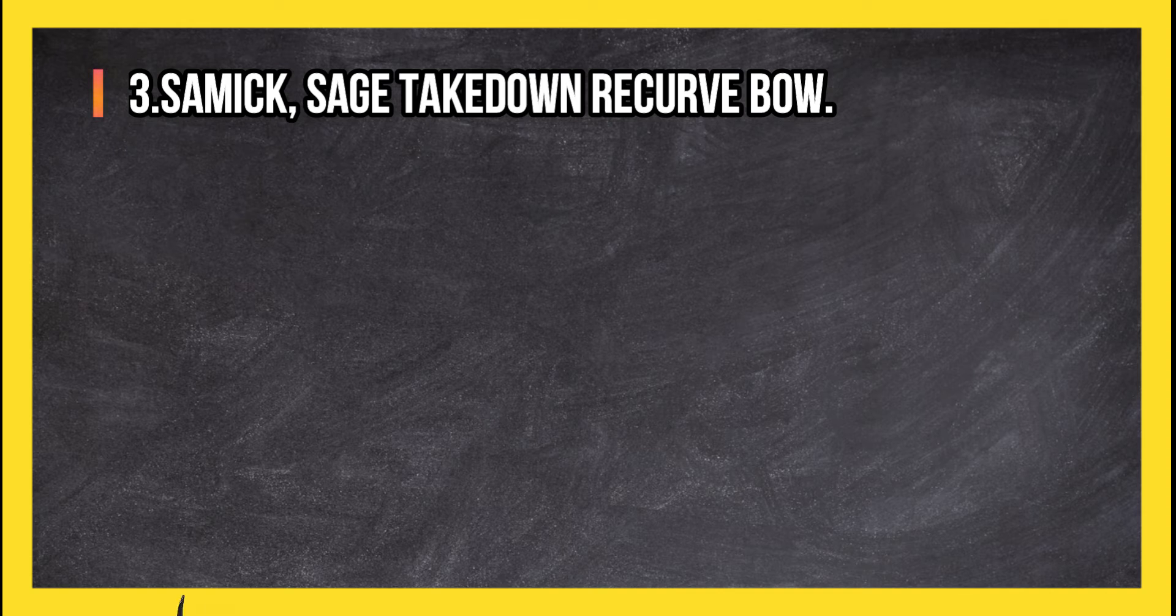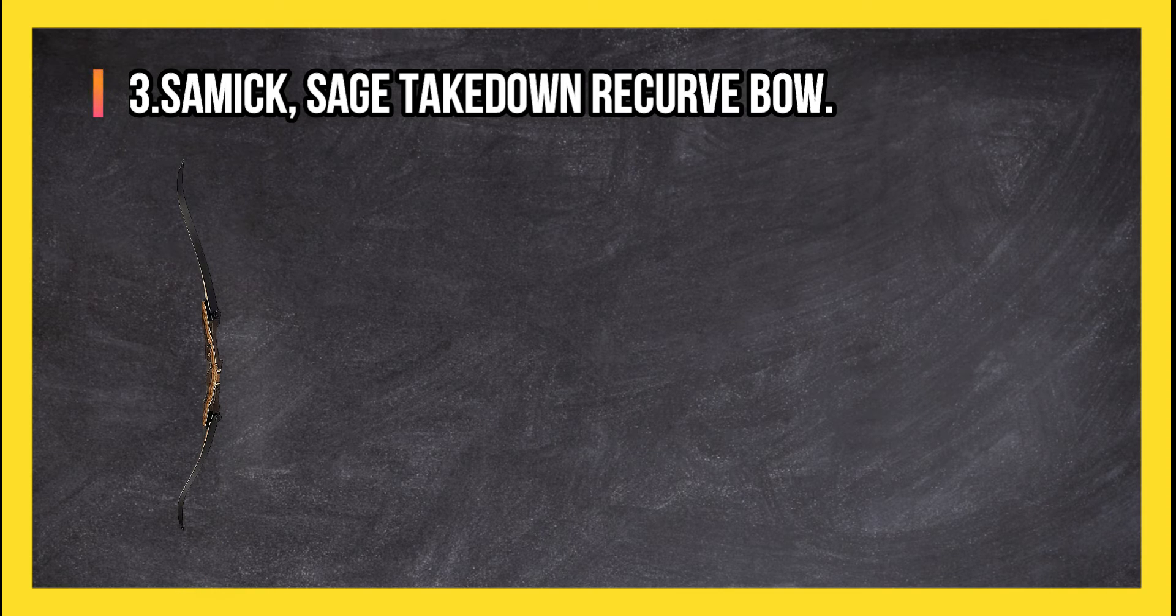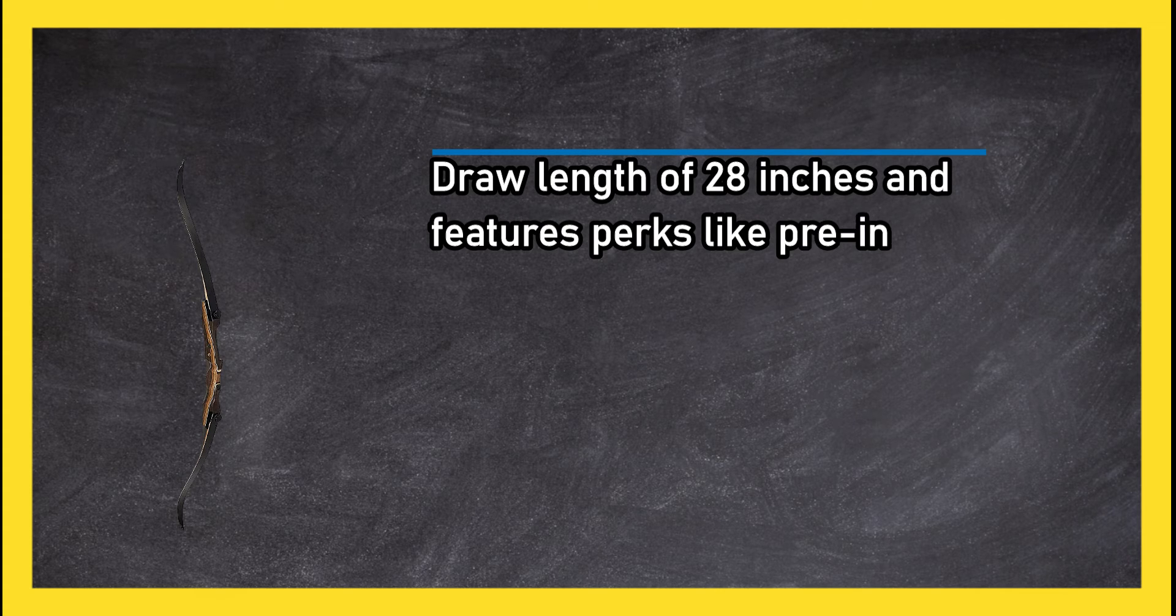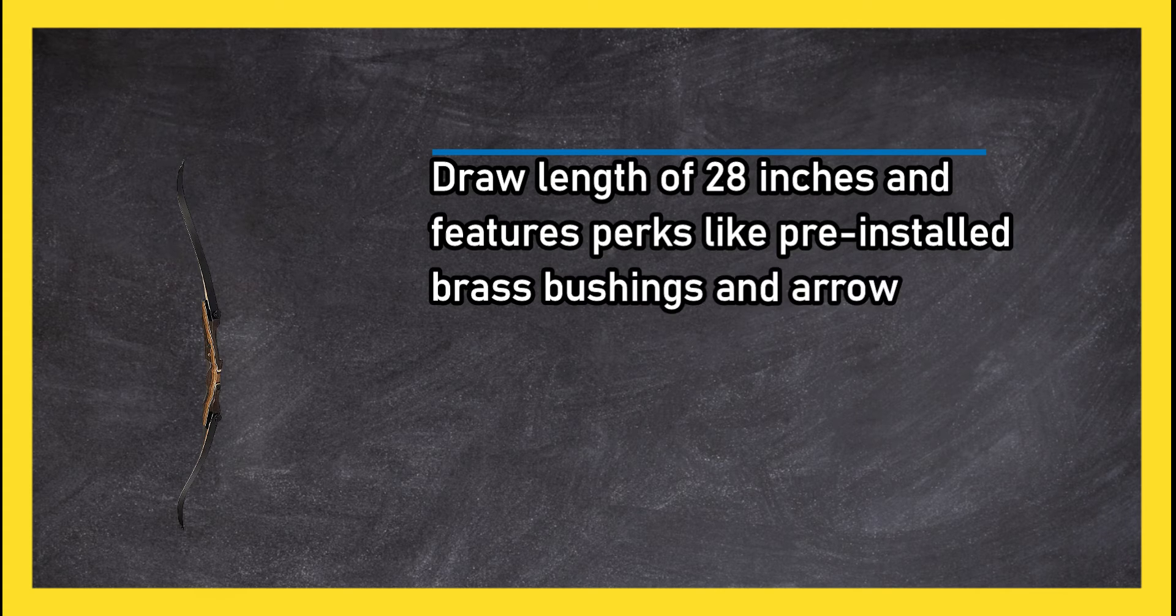At number 3, Samick Sage Takedown Recurve Bow. Draw length of 28 inches and features perks like pre-installed brass bushings and arrow rest.